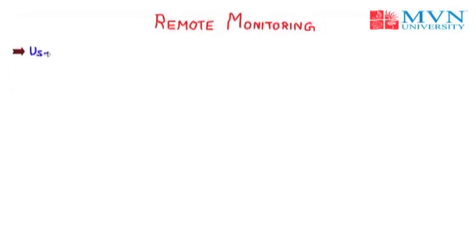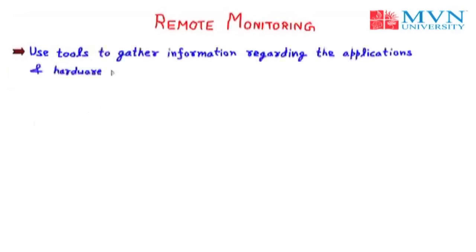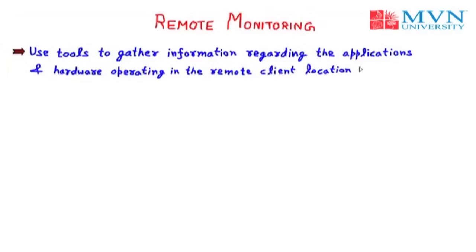The first aspect of remote monitoring is that it uses tools to gather information regarding the applications and hardware operating in the remote client location. These tools gather information about the applications or hardware being used at the remote side. For example, remote monitoring tools may include a telecom sector local server or a remote server, and you collect all this information.